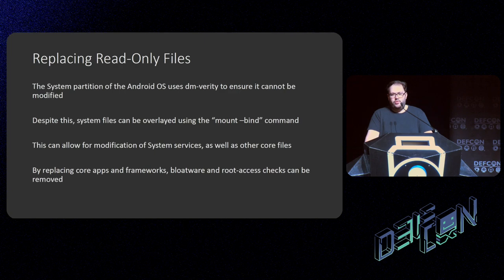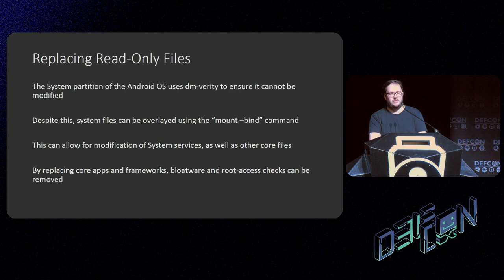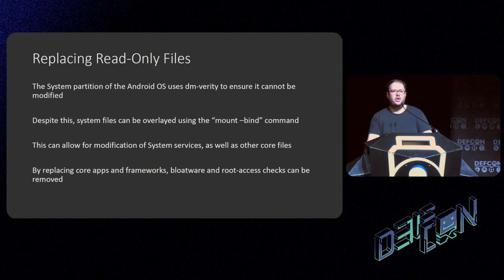While this was pretty much a read-only process and rebooting the device would lose root access, I could still override some read-only files. The system partition stores a lot of system data, is a read-only filesystem, and uses DM-Verity to make sure it has appropriate signatures. However, using the `mount --bind` command, you can temporarily override the files there with your own. Meaning that if I wanted to modify the frameworks — which had root detection and things like that — I just needed to do that temporarily and it would work without damaging the device.